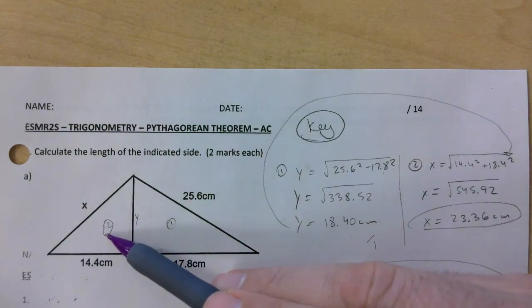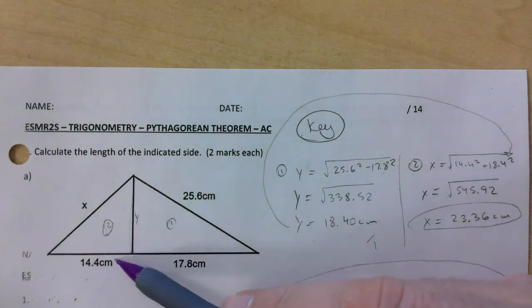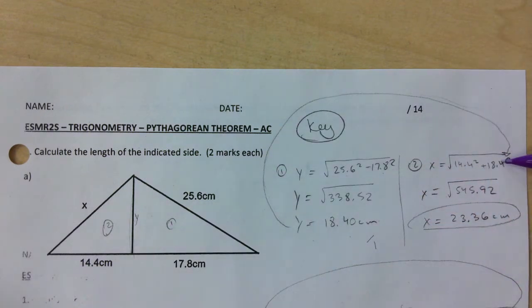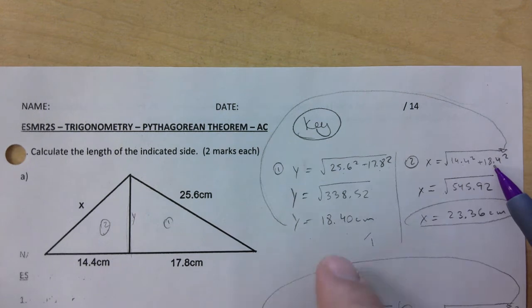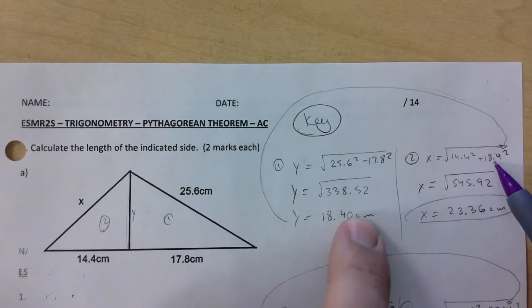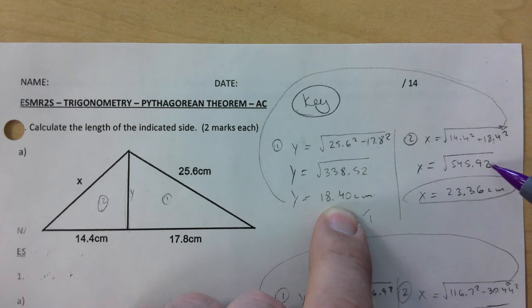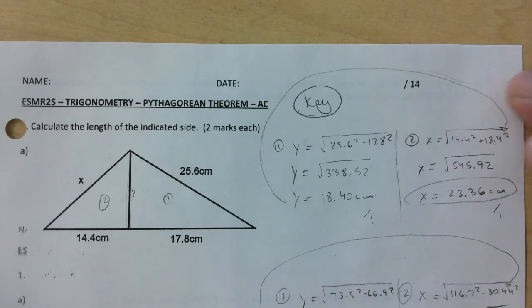You get a mark if you come up with 1840. Then we're moving over to that second triangle here, and X is our hypotenuse. So we're gonna have to add these two legs squared. I need to see that Y value being transferred over to your calculation. So it's this squared plus whatever you got earlier. If you made a mistake here you lose that mark, but you would still get the mark here if you're adding and squaring. You get 2336, so another mark right there.